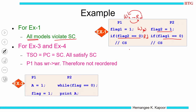Now we will look at examples 3 and 4. In example 3, P1 has two writes and P2 has a read followed by a read. Am I relaxing write-after-write or read-after-read in this model? No — we are only relaxing write and read. We are not allowing reordering of writes and writes. Hence TSO, PC, and IBM 370 all satisfy sequential consistency in example 3. Similarly in example 4, you have a write followed by a write and a read followed by a read — we do not reorder them. The model says you cannot reorder these, hence sequential consistency will be guaranteed.